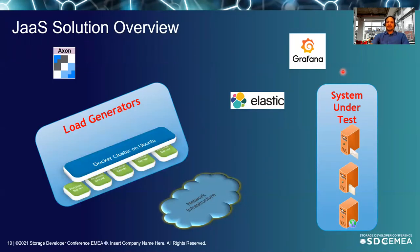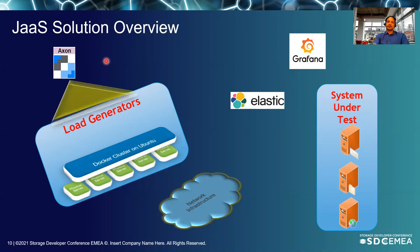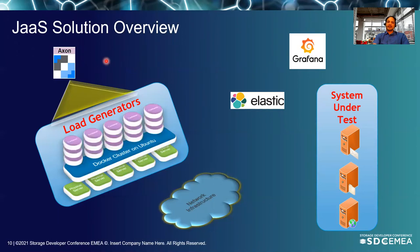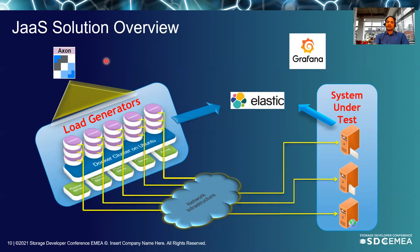At a high level, when a user goes to Axon and submits a job specifying which workload to run on which application, the job is submitted to the load generators as a Docker service. The load generators bring up containers, which retrieve the JMeter script from the database and start generating load on the network infrastructure. All data generated by the load generators and from the system is collected into Elasticsearch and visualized in Grafana as correlated data.